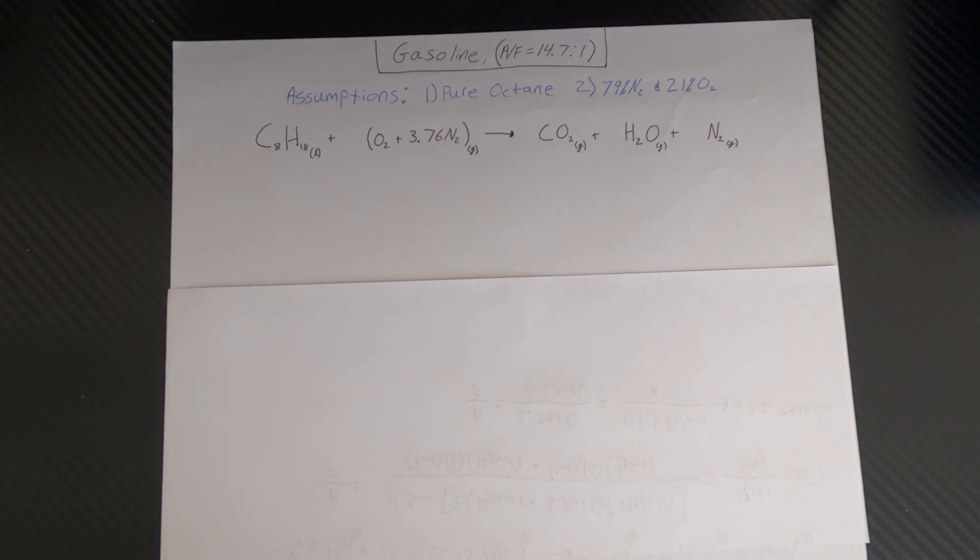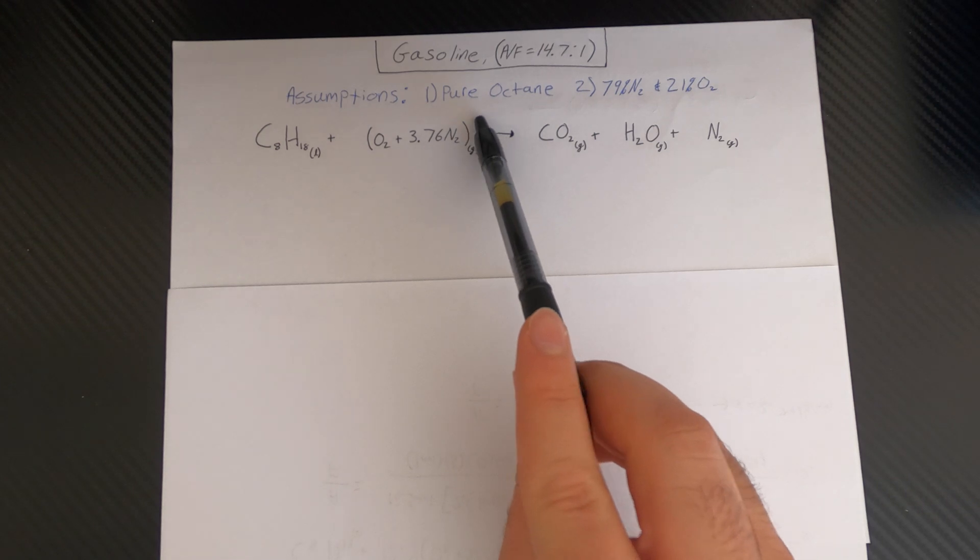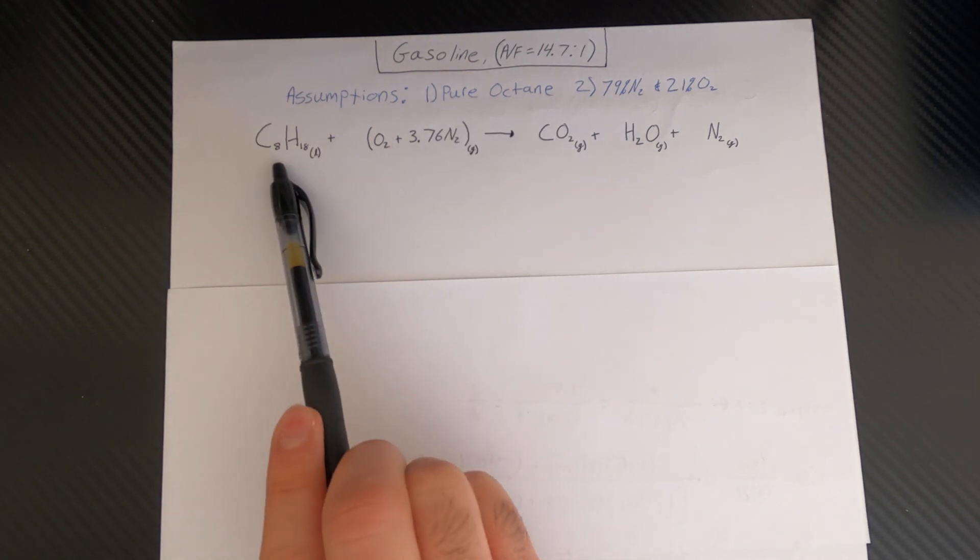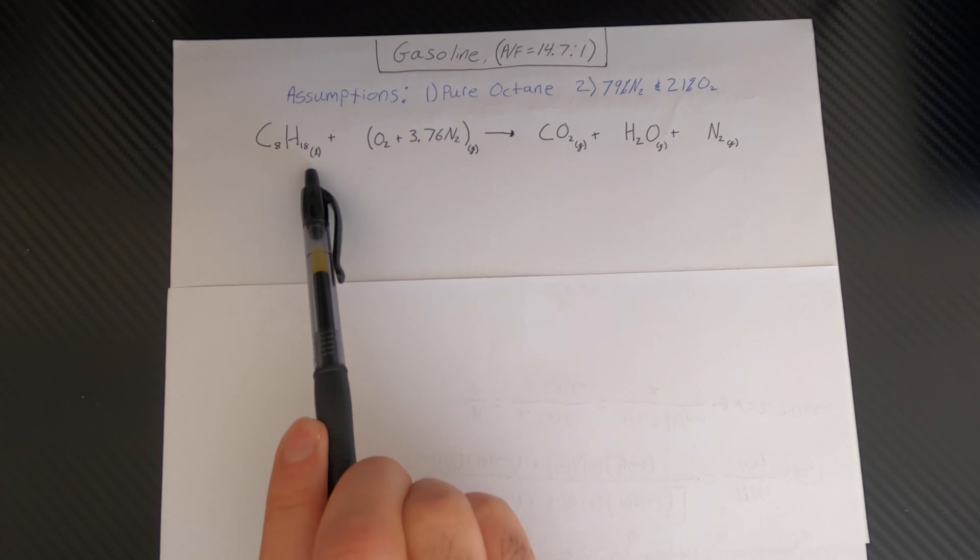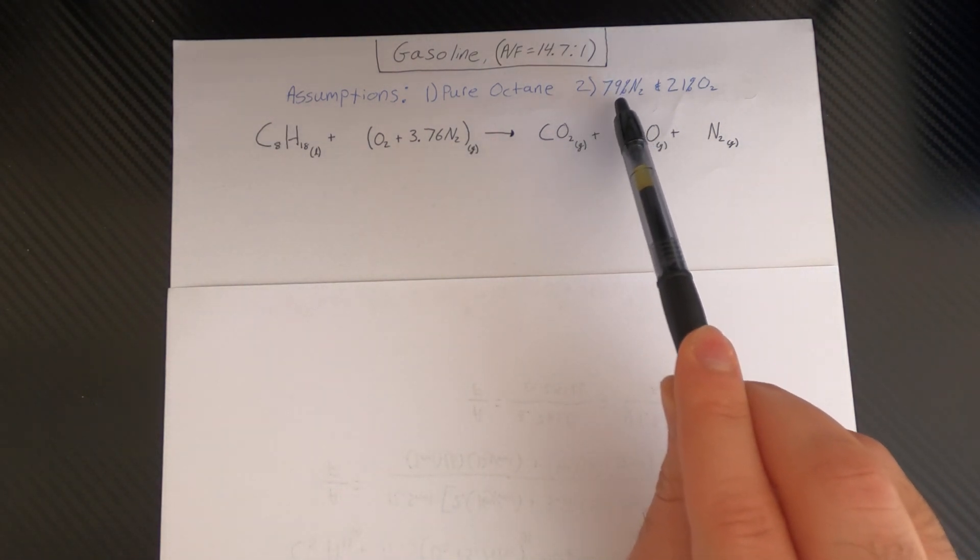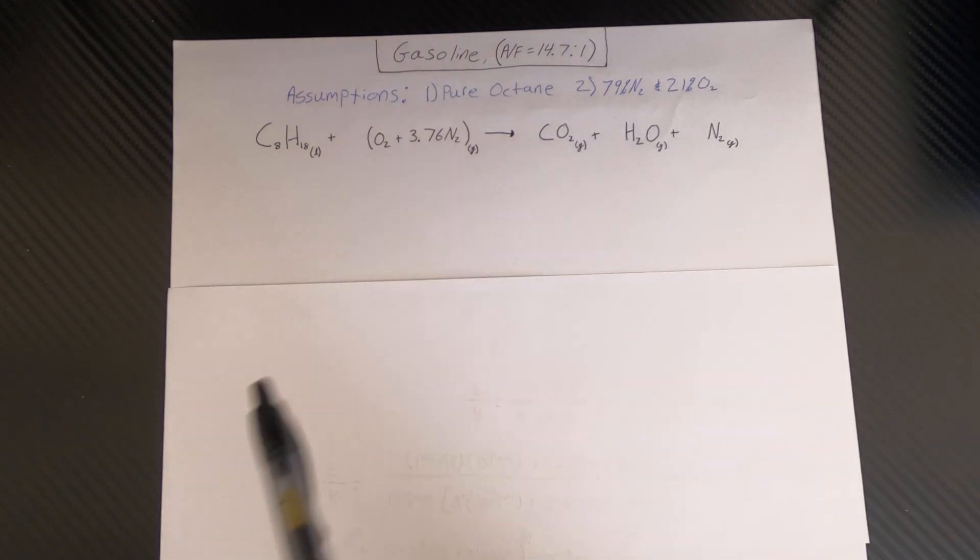Now in order for us to do this in a simplified manner we need to make two assumptions. The first is gasoline being represented as pure octane, which is C8H18 in its liquid form, and second that the air is comprised of 79 percent nitrogen and 21 percent oxygen.